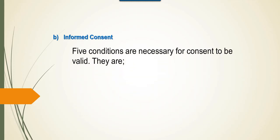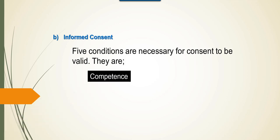Five conditions are necessary for consent to be valid: competence, information, voluntary decision, comprehension, and authorization. Competence is the legal capacity of a person to make a decision. Adults are presumed to be competent unless otherwise declared by a court of law. Competence is also defined as the capacity to make a responsible choice. A mentally ill adult is legally capable but is not in a position to make an autonomous decision; hence, he lacks competence.